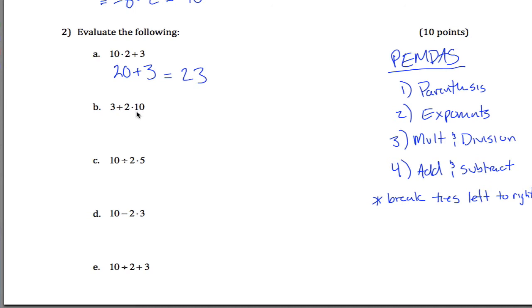3 plus 2 times 10. Again, be careful. This is actually the same as this problem. I want to multiply first. This is not 3 plus 2, which is 5, times 10. It's 3 plus 2 times 10, which is 20. Do multiplication before addition. 3 plus 20, as I saw above, is 23.